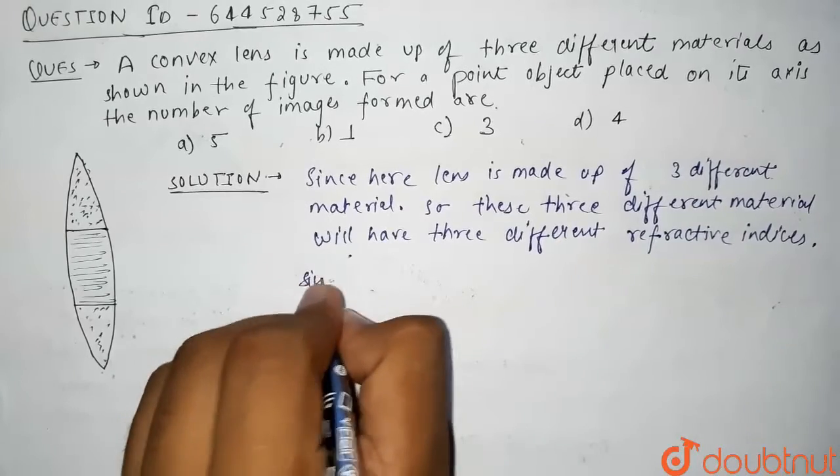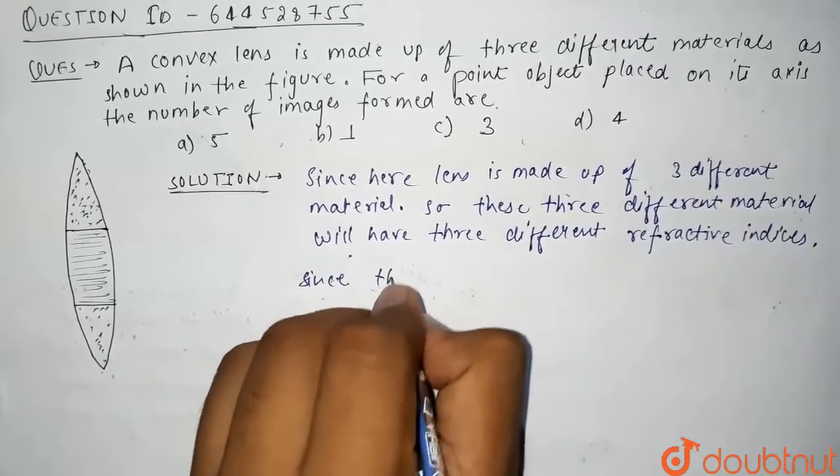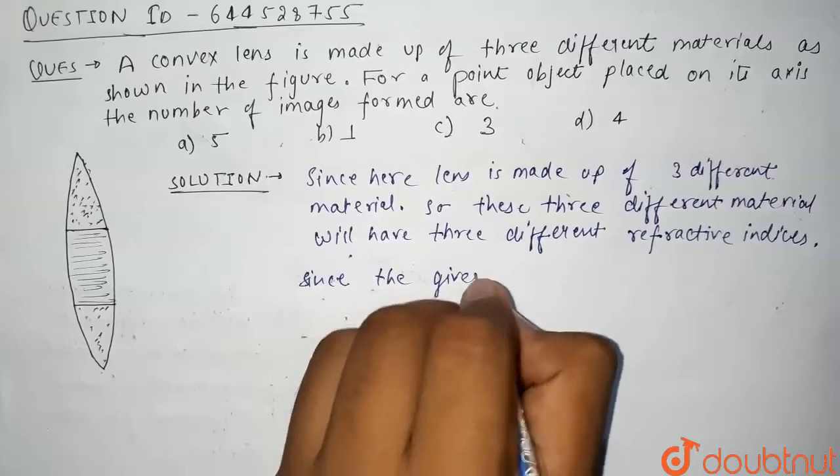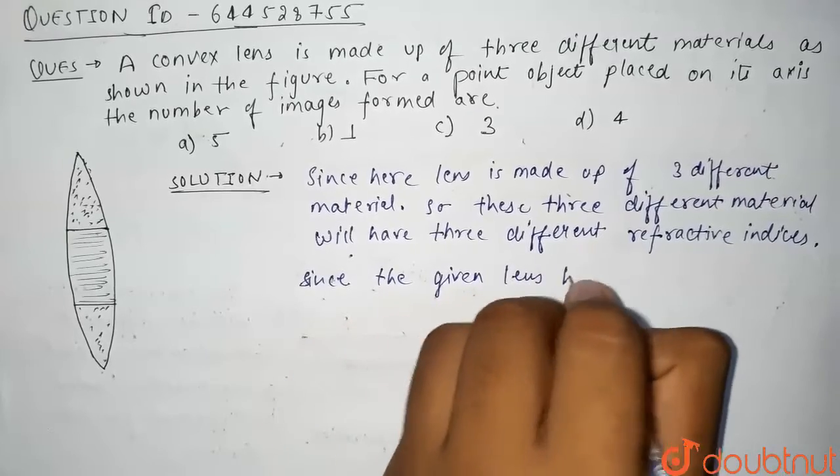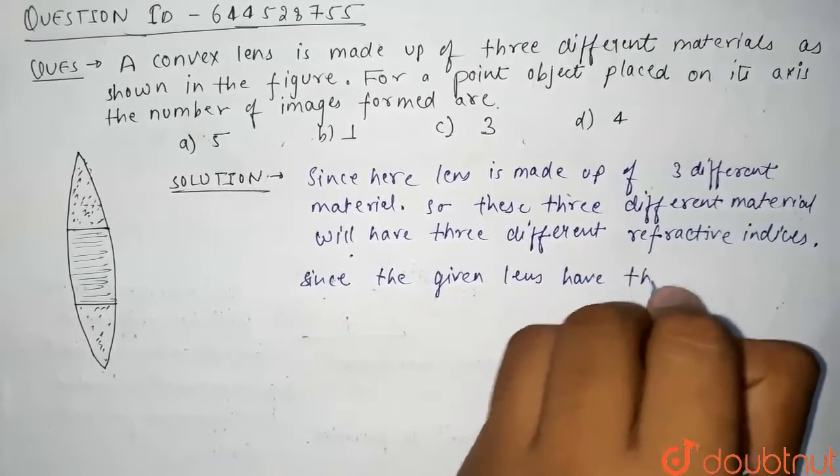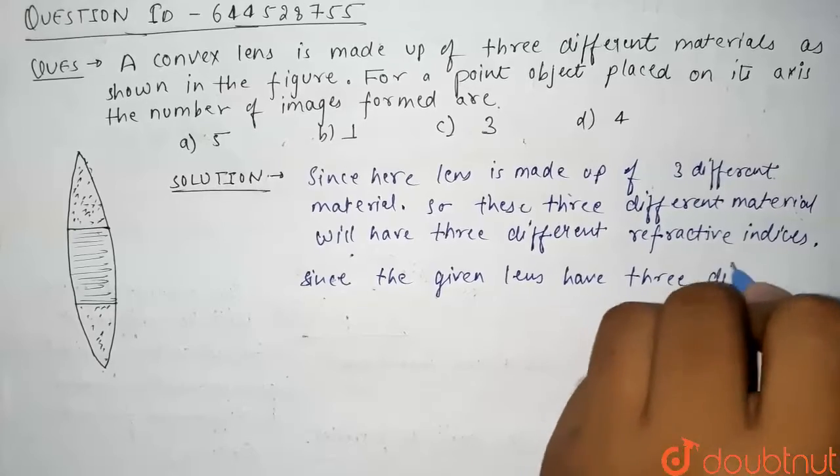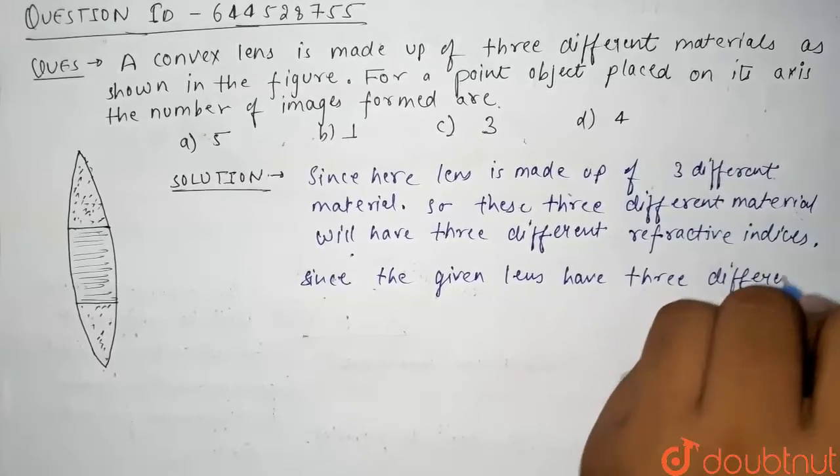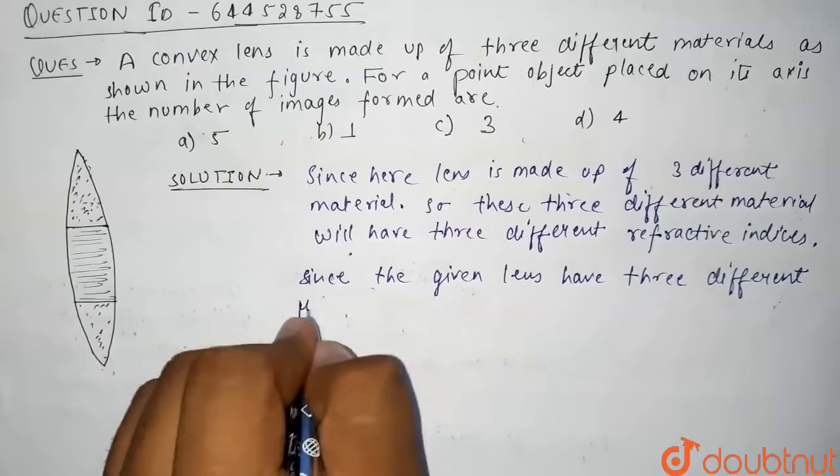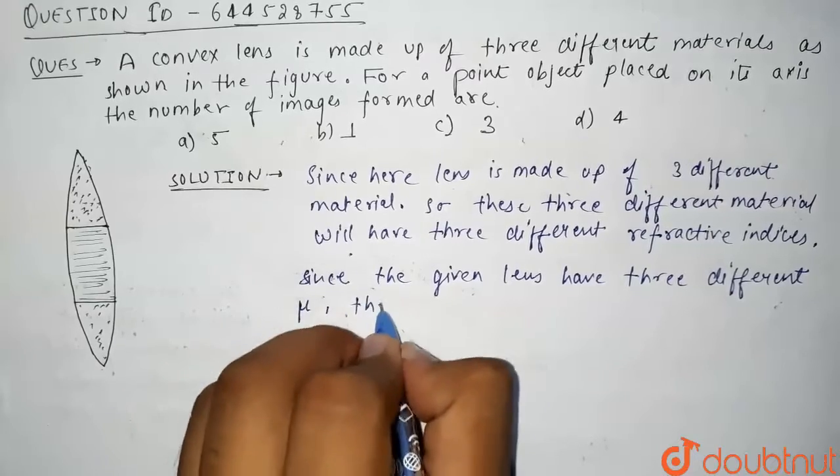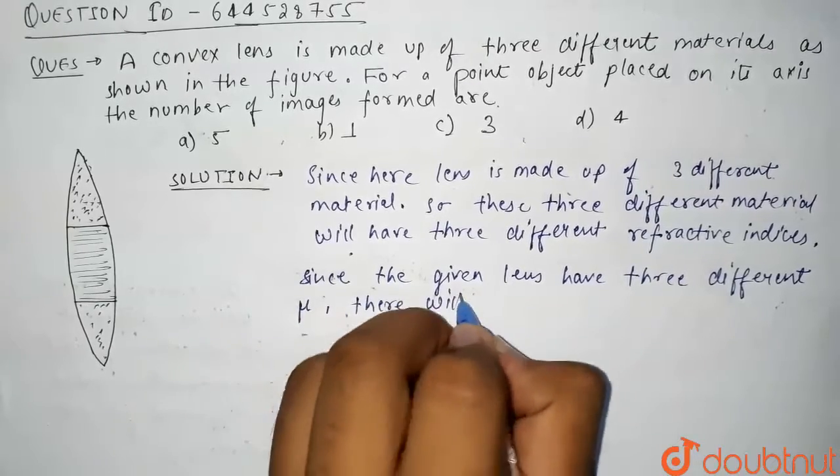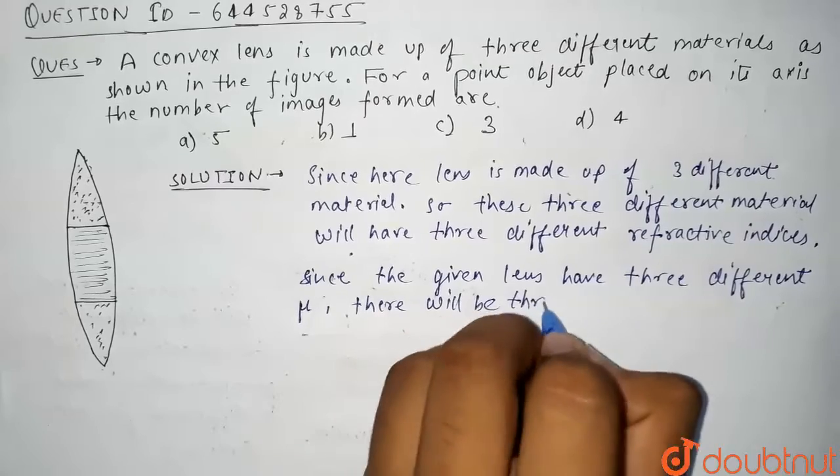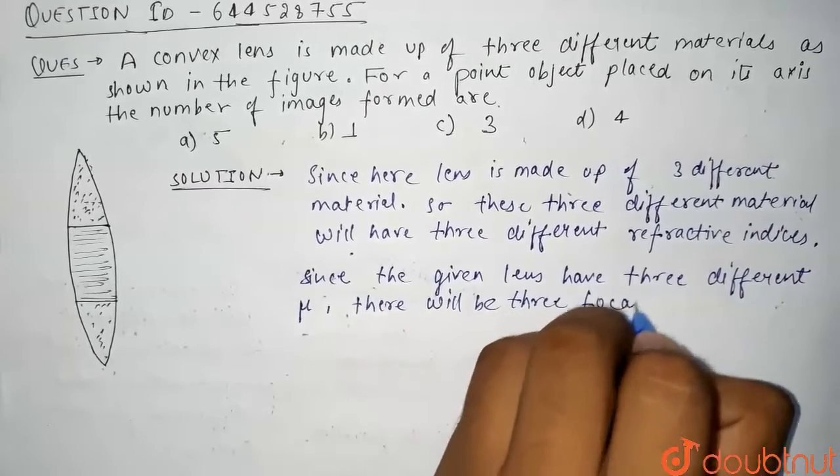Since the given lens has three different refractive indices, that is mu, so there will be three focal lengths.